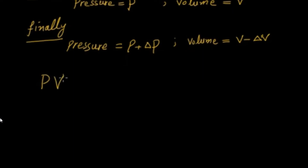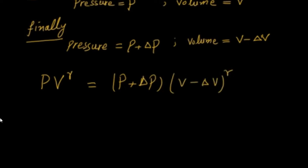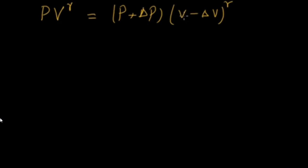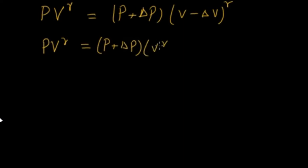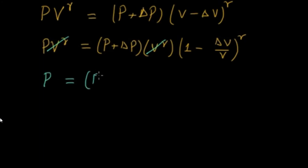Now put the values: PV^γ = (P + ΔP)(V − ΔV)^γ. Multiply out the factors; V^γ is common. Cancel V^γ from both sides. This gives the simplified equation: P = (P + ΔP)(1 − ΔV/V)^γ, which is equation 1. The term (1 − ΔV/V) has the power gamma, which is a complex power.